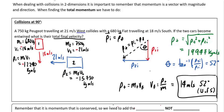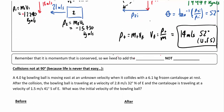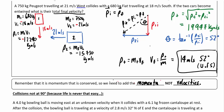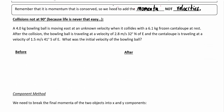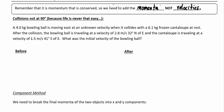That's it in a nutshell. The only issue is we're not always going to deal with situations where the collision happens at right angles. Remember that it's momentum that is conserved, so we need to add the momenta, not the velocities — it would be meaningless to just add velocities without accounting for mass. If we run into a collision that's not at 90 degrees, we've got two options: the component method or the trig method.